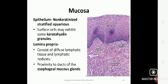The underlying lamina propria is similar to the lamina propria throughout the alimentary tract. That is, it has diffuse lymphatic tissue, which is scattered throughout, and lymphatic nodules, often in proximity to the ducts of the esophageal mucous glands.